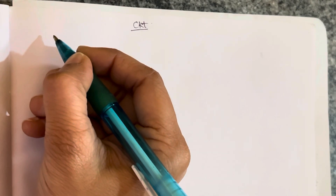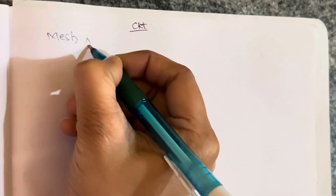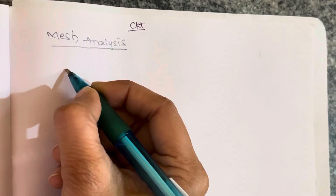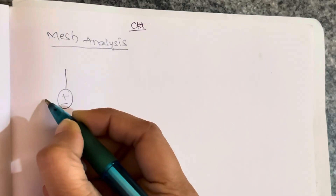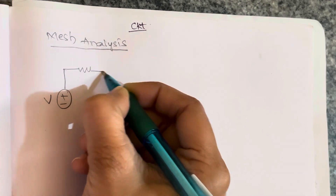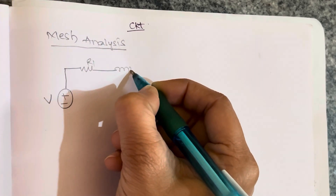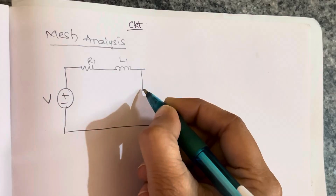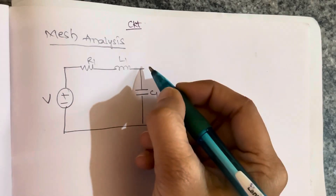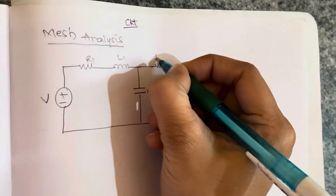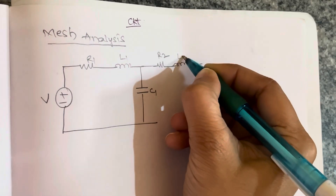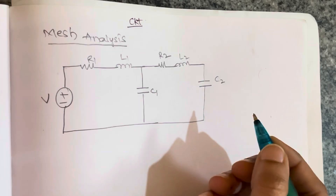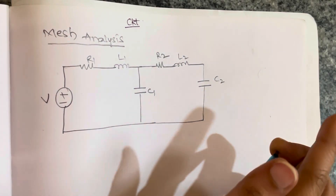Now let's draw the circuit for equation 5 using mesh analysis. In mesh analysis we have a voltage source V, with R1 and inductor L1 and capacitor C1 in the first mesh. Then R2, inductor L2, and capacitor C2 in the second mesh. This is the torque-voltage electrical analogy circuit verified using mesh analysis.